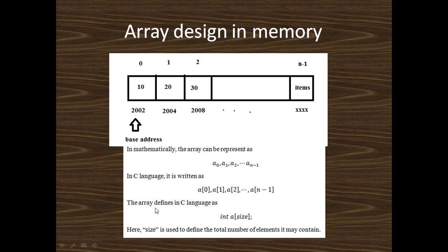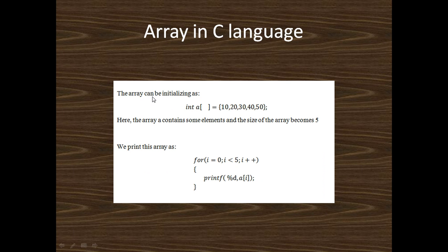An array is defined in C language as: int a[size], where size defines the total number of elements the array may contain. We can initialize an array as int a[] = {10, 20, 30, 40, 50}. Here there are 5 elements, so the size of the array becomes 5.